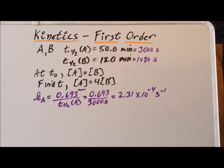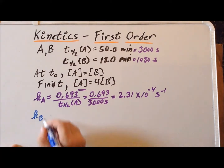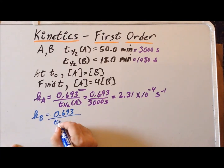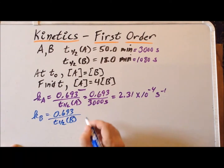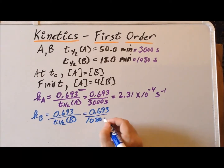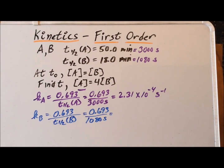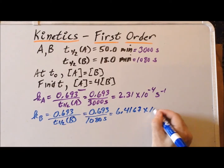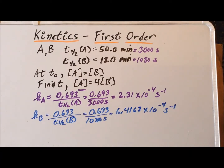Inverse seconds are the units of the first-order rate constant. Next, we compute the first-order rate constant k_B for B, which is 0.693 divided by the half-life of decomposition of B. So, 0.693 divided by 1,080 seconds gives us k_B = 6.4167 × 10⁻⁴ inverse seconds. Now we have the appropriate first-order rate constants for A and for B with proper units.